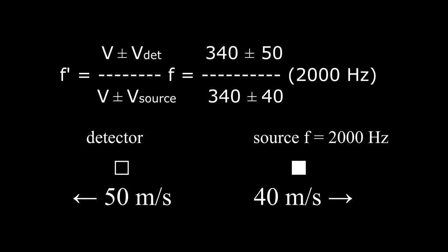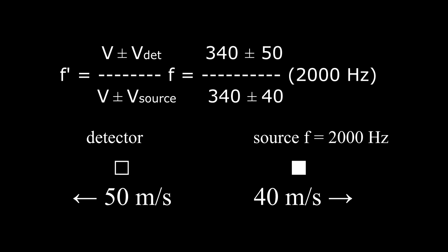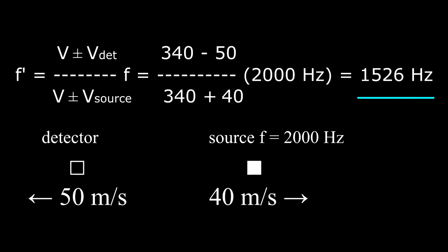In this third example, both the source and detector are moving away from each other, so both are trying to decrease the shifted frequency f prime. For the velocity of the detector, which occurs in the numerator, we choose the minus sign to make the ratio smaller. For the velocity of the source, which occurs in the denominator, we choose the plus sign to make the ratio smaller. And the calculation gives 1526 hertz.